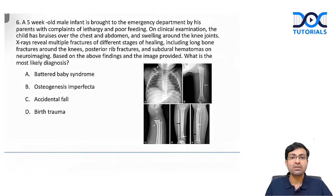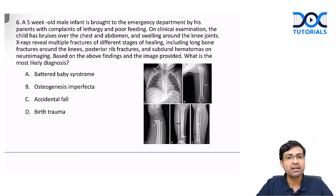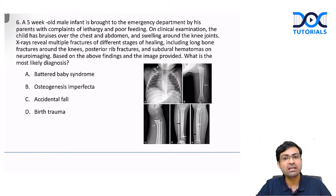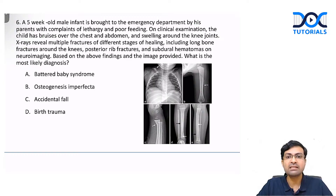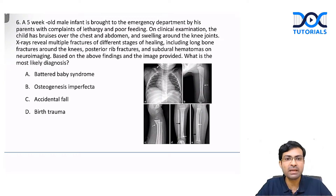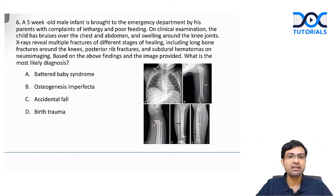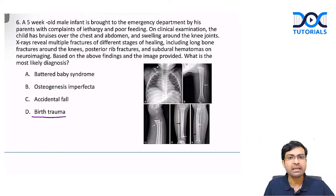The last and most complicated question: a five-week-old male infant is brought with lethargy and poor feeding. On examination, he has bruises over the chest and abdomen, swelling around the knee joints. X-ray reveals multiple fractures in different stages of healing including long bone fractures and posterior rib fractures, and neuroimaging shows subdural hematomas. What is the most likely diagnosis?